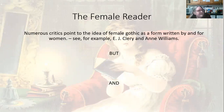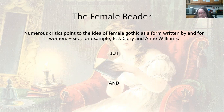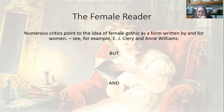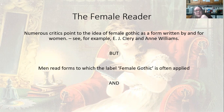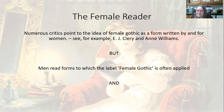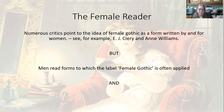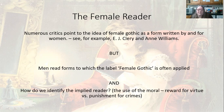The last definition in this set is the idea that we can link the female Gothic to the concept of the female reader — critics like E.J. Cleary and Anne Williams point to the female Gothic as a form written by and for women, like the Gothic romance in the 20th century and the Radcliffeian Gothic in the 18th. But as we know, men read forms of the Gothic to which the label 'female Gothic' is often applied. Can we really define it by who's reading it? That seems a strange and problematic practice.